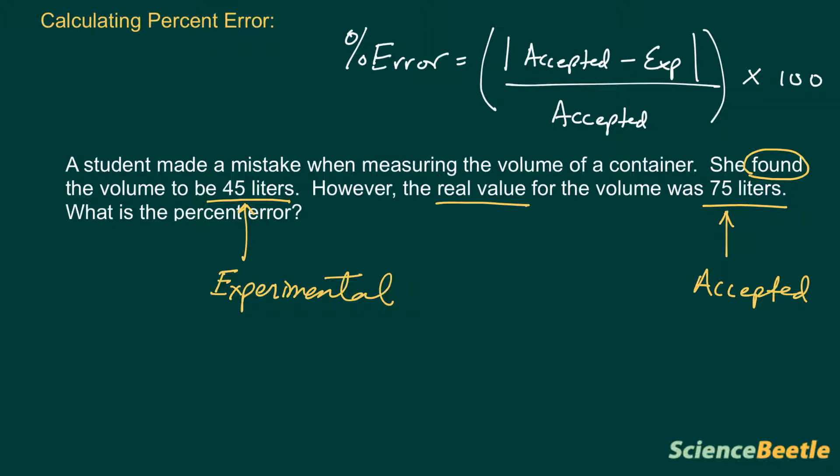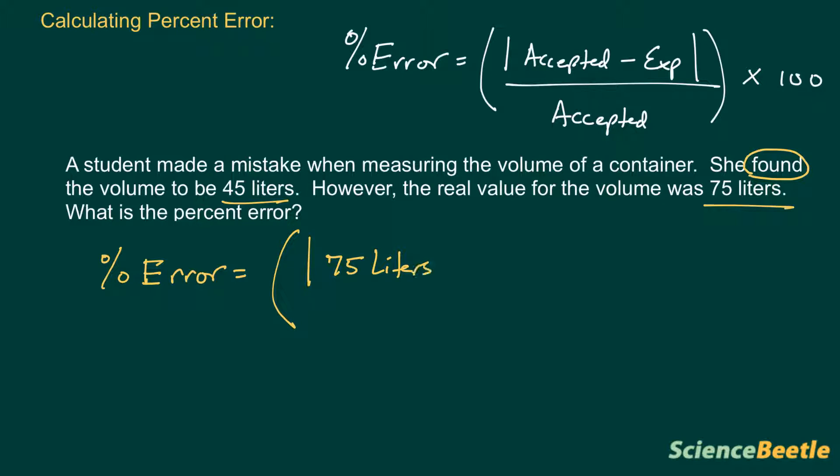Now that we know this, we're able to go in and actually calculate the information. The percent error is going to be equal to the absolute value, for the accepted in this case the accepted value is going to be 75 liters, minus the experimental which in this case is 45 liters, and we're going to divide this by the accepted value. In this case the real value is going to be 75 liters.